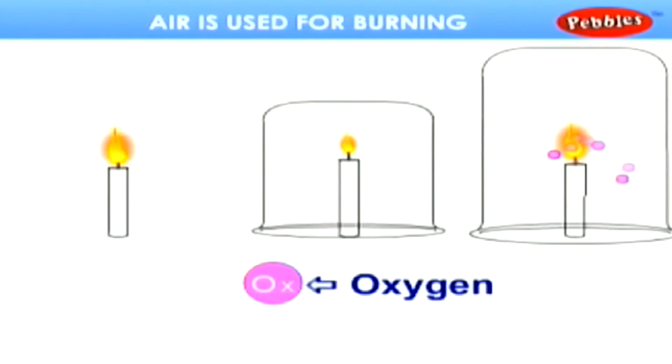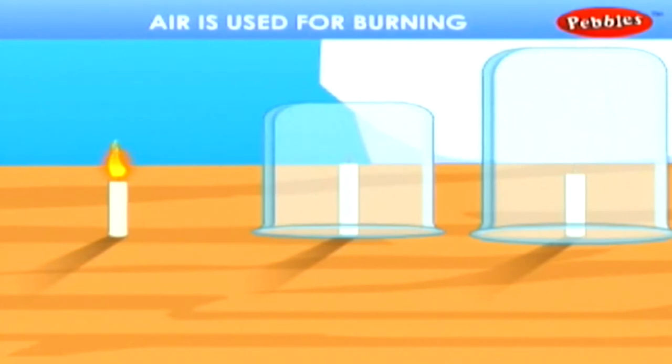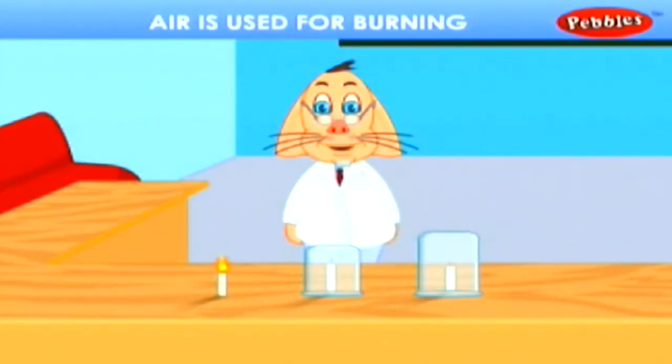How many seconds it takes for each candle to go out. It is observed that the candle covered with a small jar goes out earlier than the candle covered with a big jar because of the more air present inside it. Also, we can note that the candle left uncovered goes on burning due to the air in the atmosphere. This shows that the flame needs air to burn.